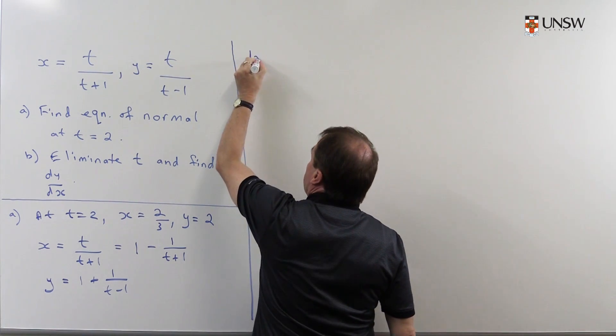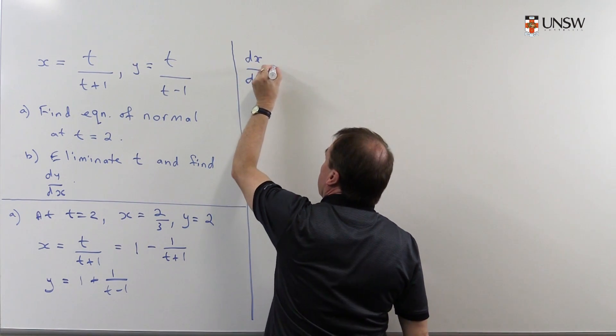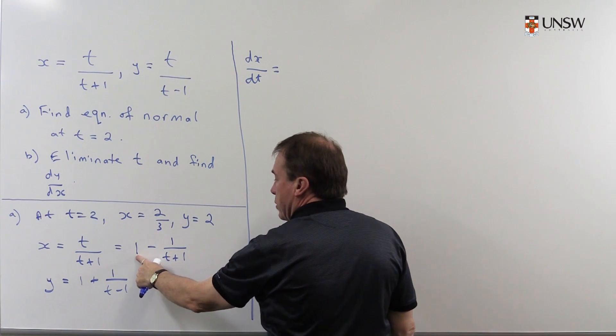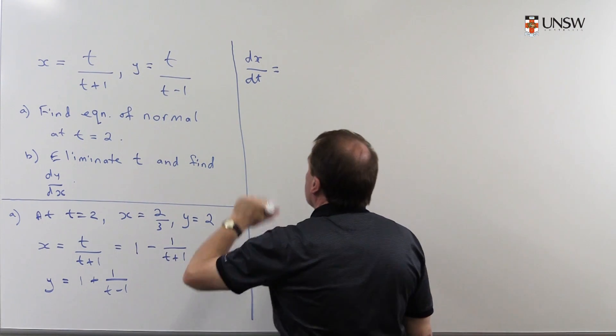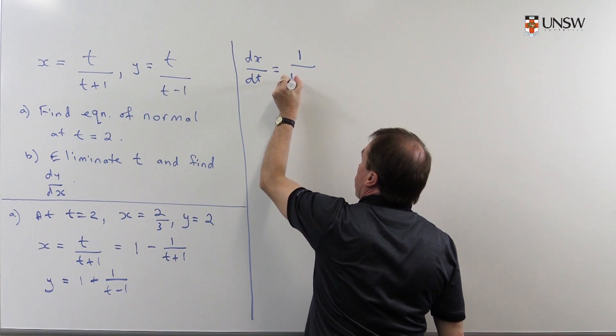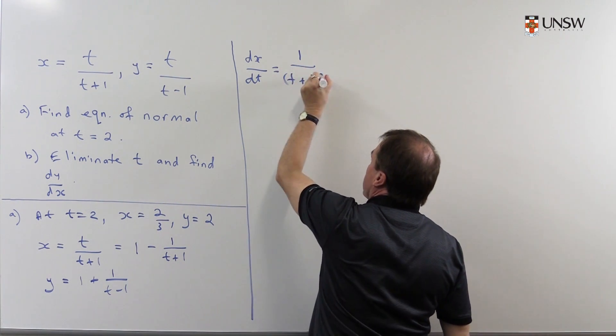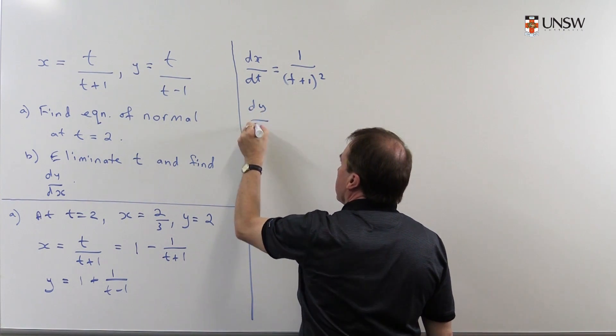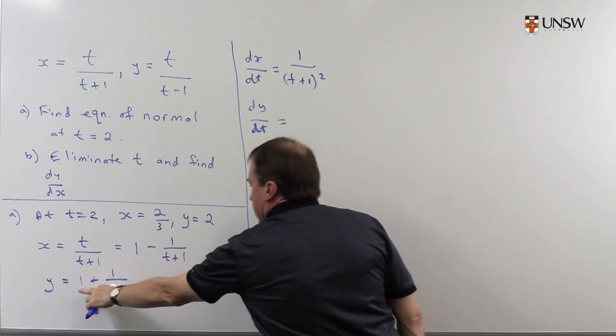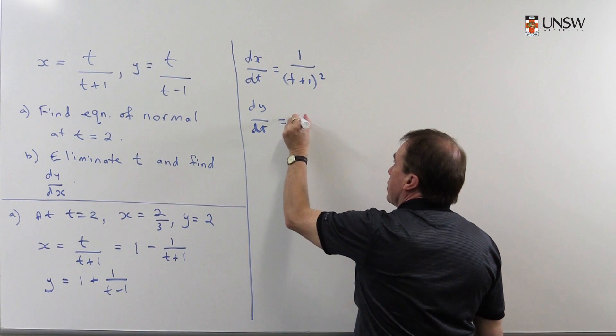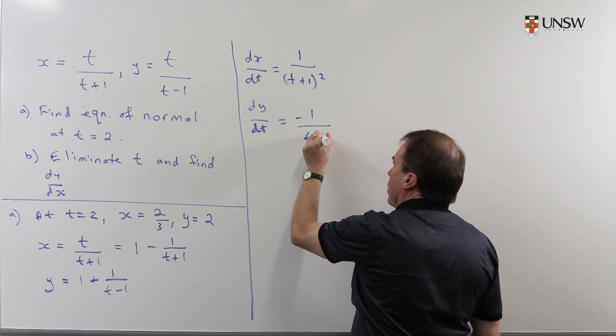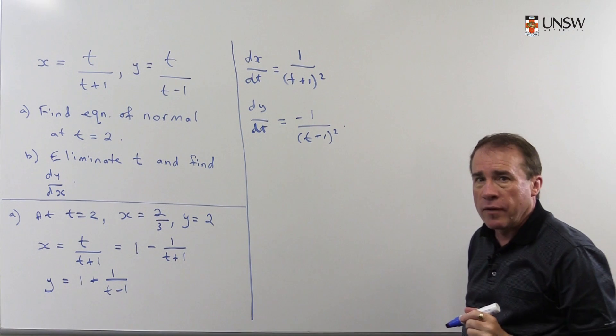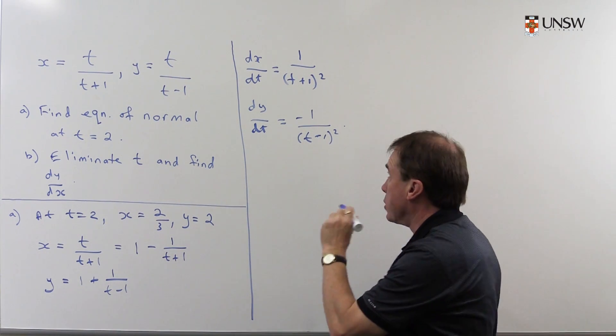But now, to get dx/dt is much easier because that differentiates to 0 and this one should be an old friend by now. So this is 1 over (t+1) all squared. And similarly, dy/dt, that'll differentiate to 0 and this will give me minus 1 over (t-1) all squared. So that gives me the derivatives with respect to t.